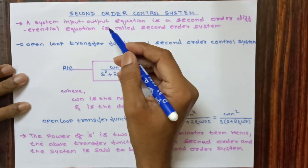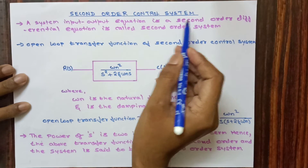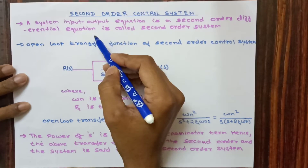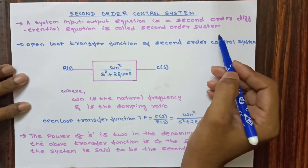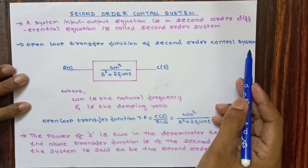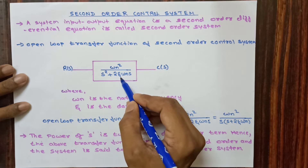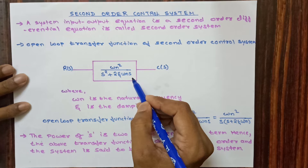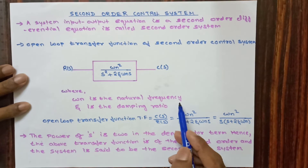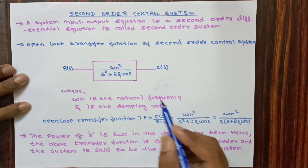Hello friends, welcome to AS Tutorials. Today we are going to discuss second order control systems. A system whose input-output equation is a second order differential equation is called a second order system. The open loop transfer function of a second order control system is given by omega_n squared divided by s squared plus 2*zeta*omega_n*s. It is an oscillatory system where omega_n is the natural frequency of oscillations and zeta is the damping ratio.